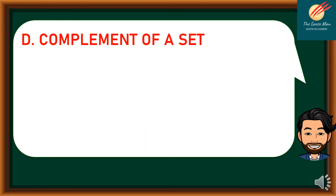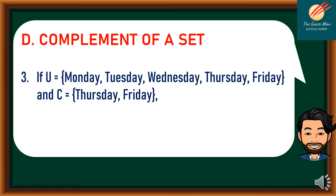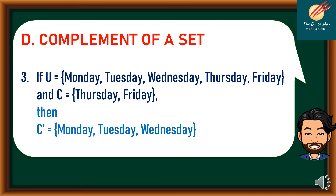Third example of complement of a set: if the universal set U is composed of {Monday, Tuesday, Wednesday, Thursday, Friday}, while C is equal to {Thursday, Friday}. To find C prime — the complement of C — we have Monday, Tuesday, and Wednesday.